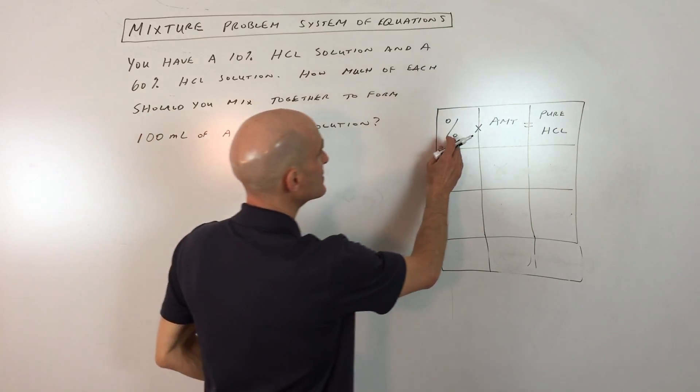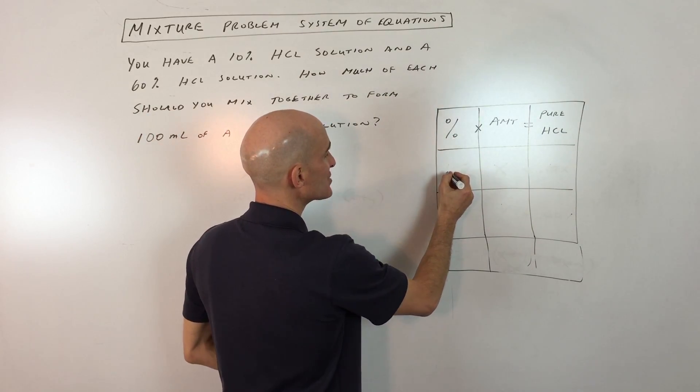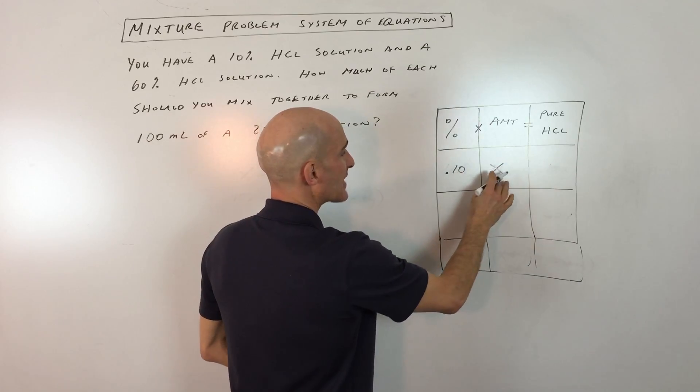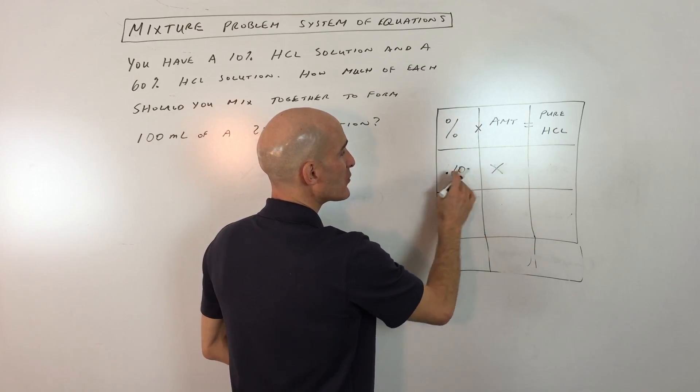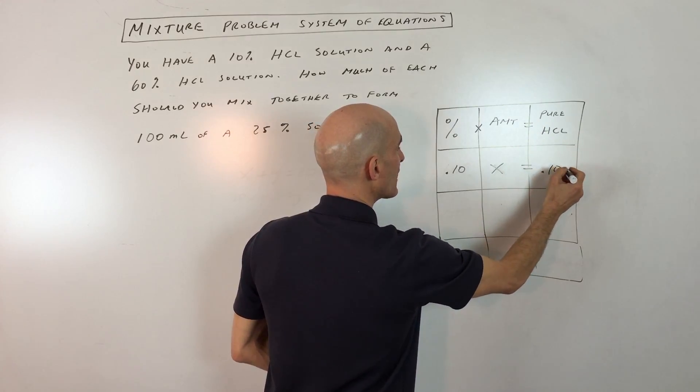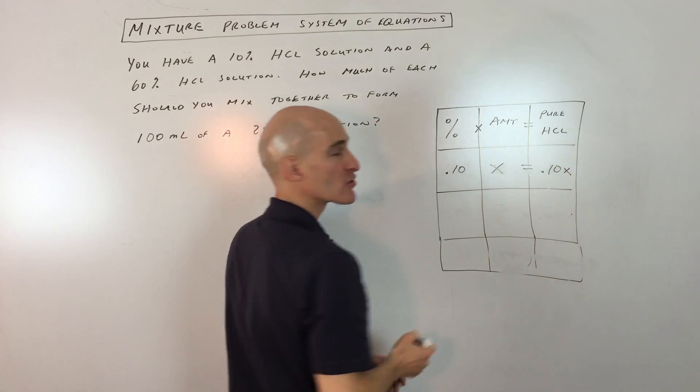Well, let's make a chart here. So what I have is the percentage, which in this case, let's just say you've got your 10% solution, times X milliliters. And when you multiply those together, what that gives you is the amount of pure hydrochloric acid, so 0.10x.